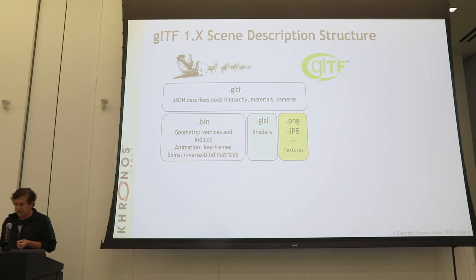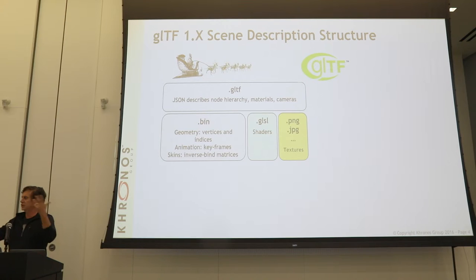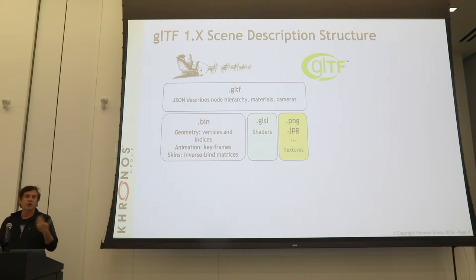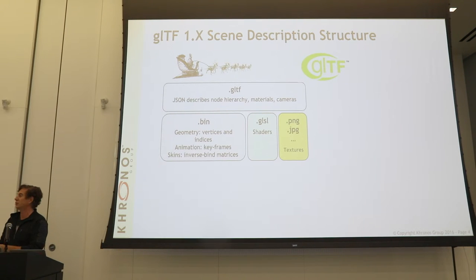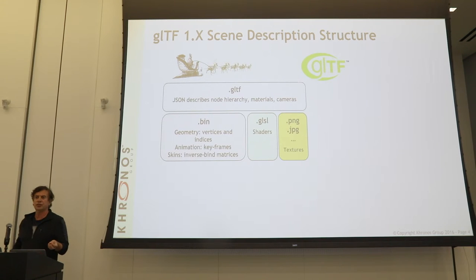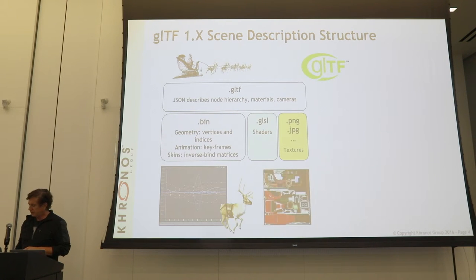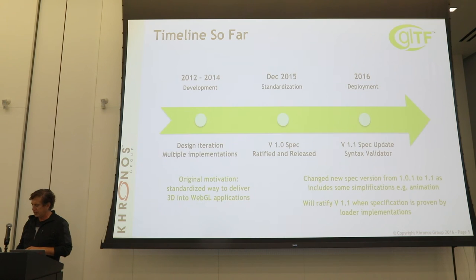GLTF files are basically a JSON package that describes a full scene with all the meshes and nodes, but not the rich data like vertex data — that's in binary files. Shading and keyframe data, all the fat stuff you don't want to do in text, is in binary files that load right into WebGL typed arrays. GLSL is used to define shaders. It can be in external files or packed and base64 encoded with the whole payload, as well as PNGs and JPEGs.